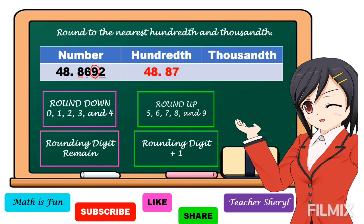What is 2 — round up or round down? It is a round-down digit. So what shall we do with 9? We're going to keep it the same, because 2 is a round-down digit — so 9 remains 9. Then the digits to the left side of 9 we copy, and 2 we drop. So our final answer is 48 and 869 thousandths.